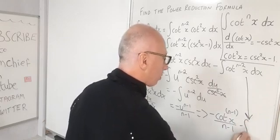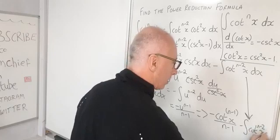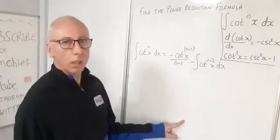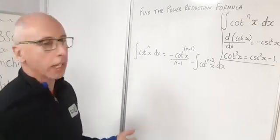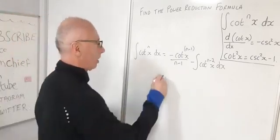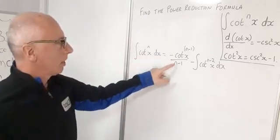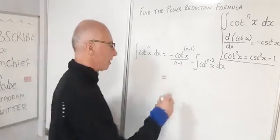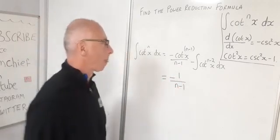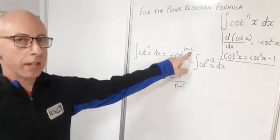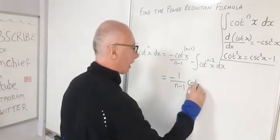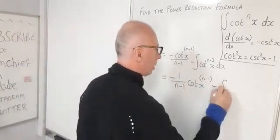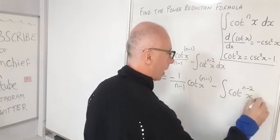Bringing down the second integral, we subtract the integral of cotangent to the n minus 2 of x dx. Tidying up, the full power reduction formula is: the integral of cotangent to the n of x dx equals negative 1 over n minus 1 times cotangent to the n minus 1 of x, minus the integral of cotangent to the n minus 2 of x dx. And there we have the power reduction formula for the cotangent function raised to the power n.